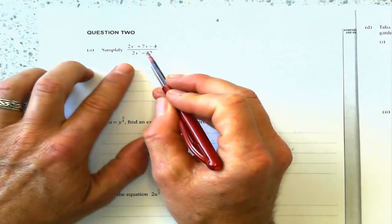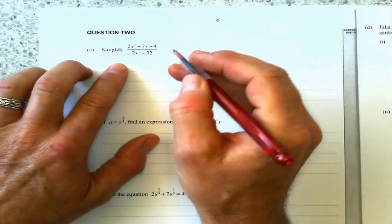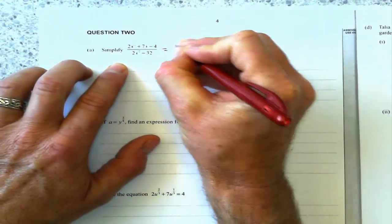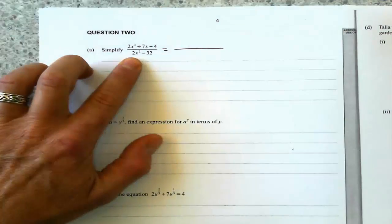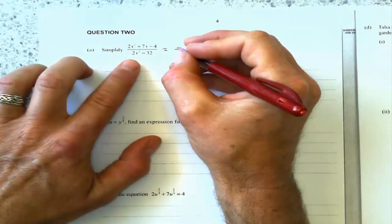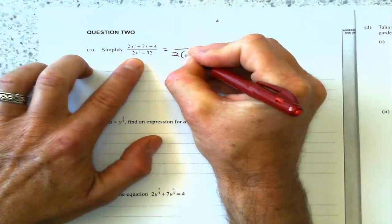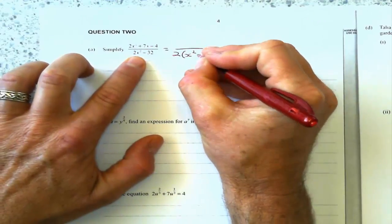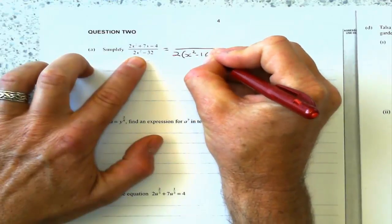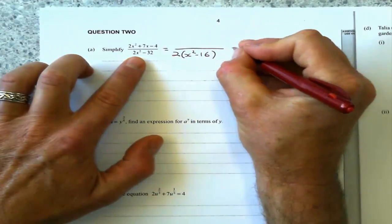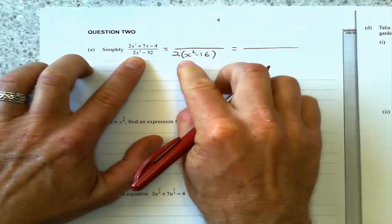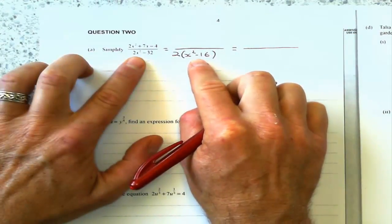It's a simplifying one. Any time I simplify, I'm going to see if I can factorize first. I look at that bottom one and I can see it has a common factor of 2. So I'll factorize that out, and that gives me 2 brackets x squared minus 16. I can see that's a difference of 2 squares.